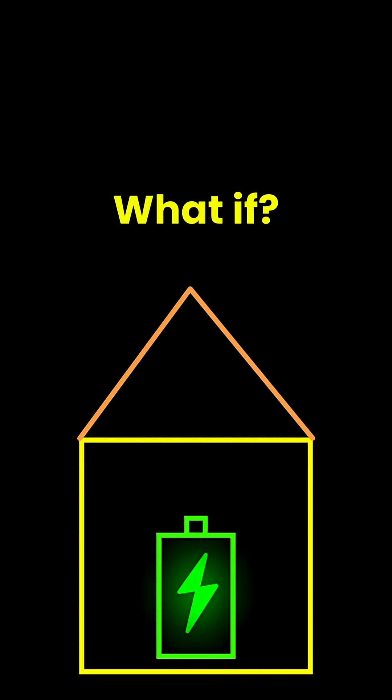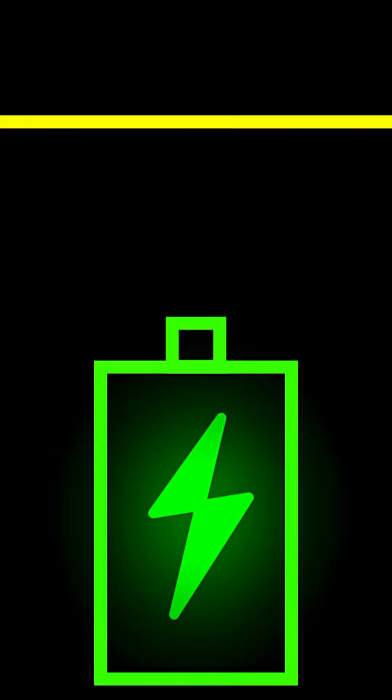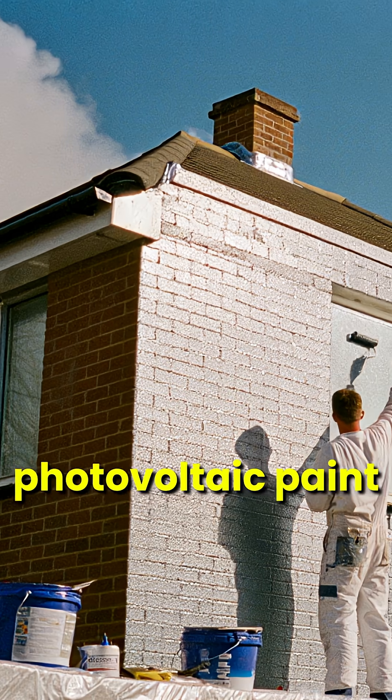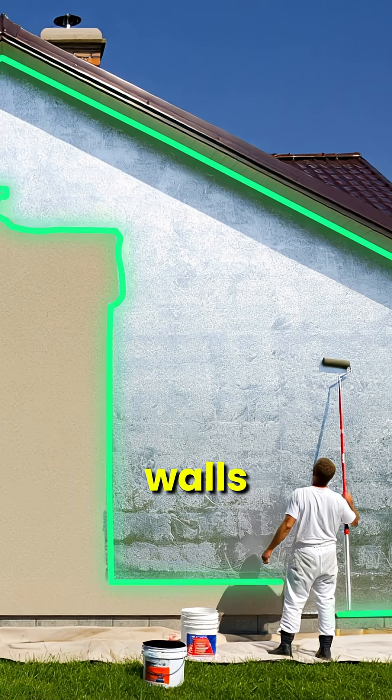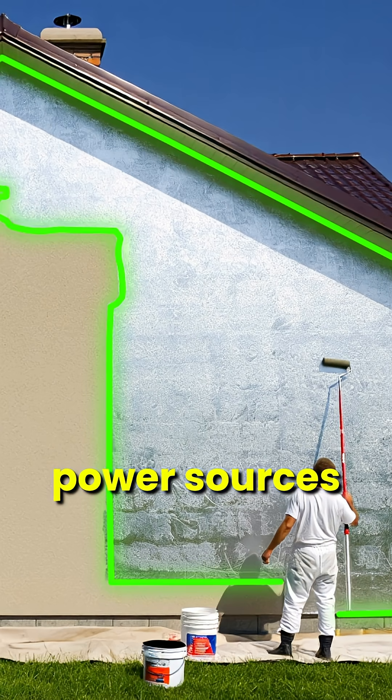What if your house could generate electricity just by being painted? Welcome to the world of solar paint, also called photovoltaic paint, a revolutionary invention turning ordinary walls into clean power sources.